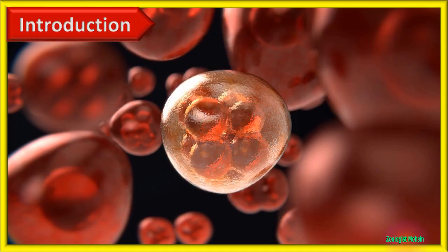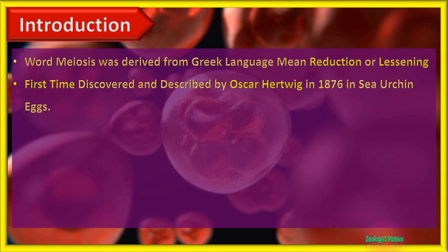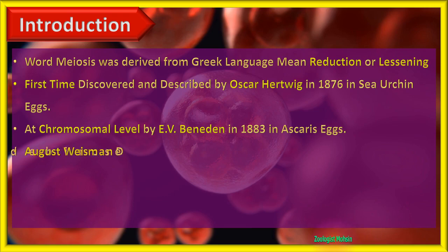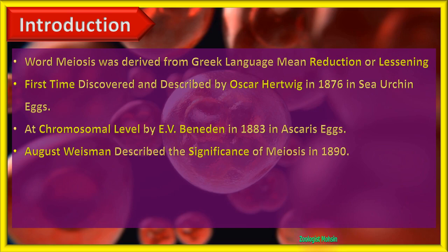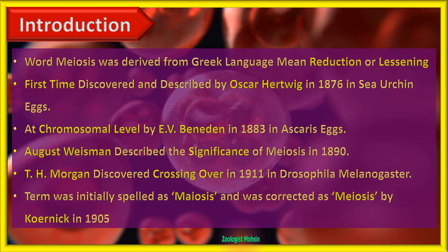Let's have a look at the brief history of meiosis. The word meiosis was derived from the Greek language meaning reduction or lessening. It was first discovered and described by Oscar Hertwig in 1876 in sea urchin. At the chromosomal level, it was first described by E.V. Benenden in 1883 in Ascaris. August Weismann described the significance of meiosis in 1890. T.H. Morgan discovered crossing over for the first time in 1911 in Drosophila melanogaster. The term was initially spelled as maiosis and was corrected to meiosis by Quernick in 1905.